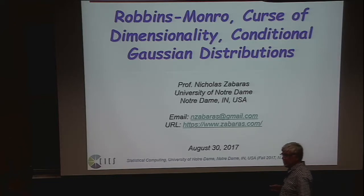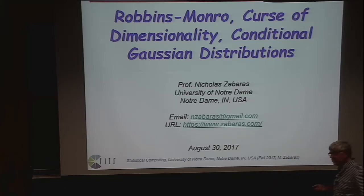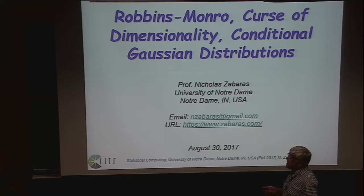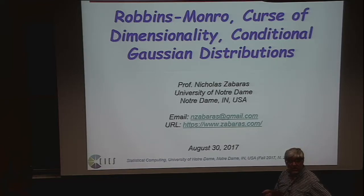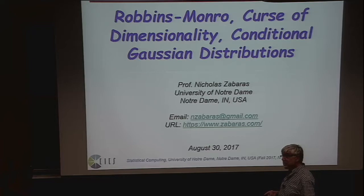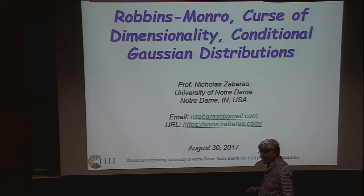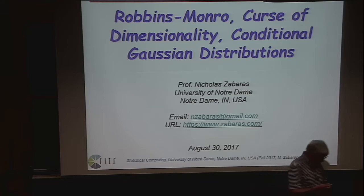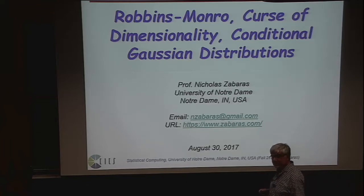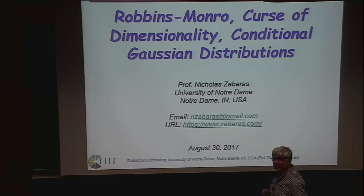We have to continue what — I hate to use the word review, because I know for some of you it's not a review and it goes very fast. But in some sense you have to trust me that whatever we cover up to now, it's no more than a chapter and a half from any basic book on machine learning. So really, we have covered nothing. We're going fast, but on the other hand, we have covered very little. I don't want to disappoint you talking about Gaussians for the last of the semester, so we have to move even faster than the speed we have up to now.